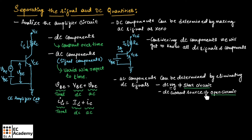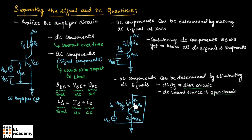So in this amplifier circuit, we don't have a DC current source; we have a DC voltage source. This DC voltage source will be removed and replaced with a short circuit. We are also having one more DC source, which will be eliminated and replaced with a short circuit. So this is the amplifier circuit after eliminating the DC components. By considering only the AC signals in an amplifier, we will get to know all the AC signals and components that are present in the circuit.